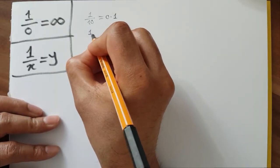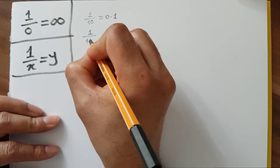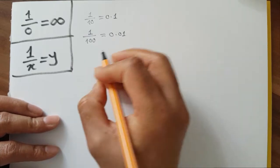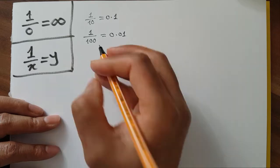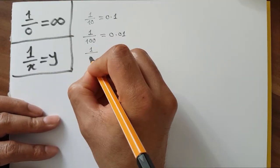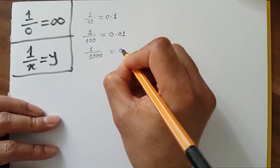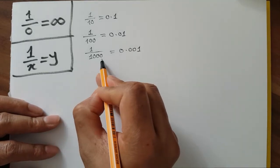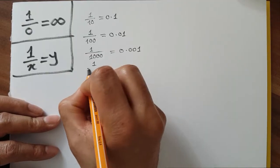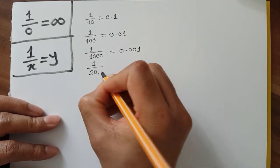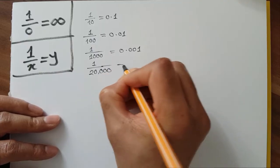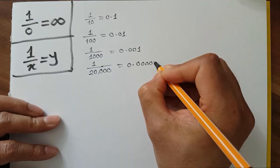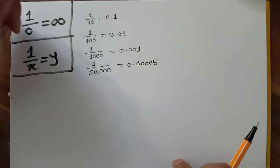If I do this again, 1 over 100 will be 0.01. And if I again increase this value to 1 over 1000, it will be 0.001. Let's say I'm increasing this again to 1 over 20,000,000 — then it will be 0.0000005.